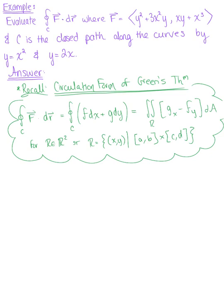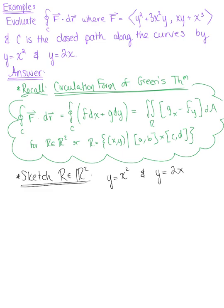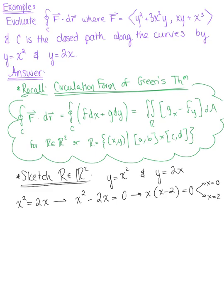To get started, let's think about the region bounded by these curves and sketch R in R2. We find where the two curves intersect by setting X squared equal to 2X. Bringing everything to one side gives X squared minus 2X equals 0, which factors as X times X minus 2 equals 0. So the curves intersect when X equals 0 and when X equals 2.